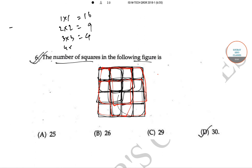And in 4 x 4 size, you'll get it to be 1 since this whole thing is a square. So, total 16 plus 9 plus 4 plus 1 is equal to 30. So, the correct option is option D.